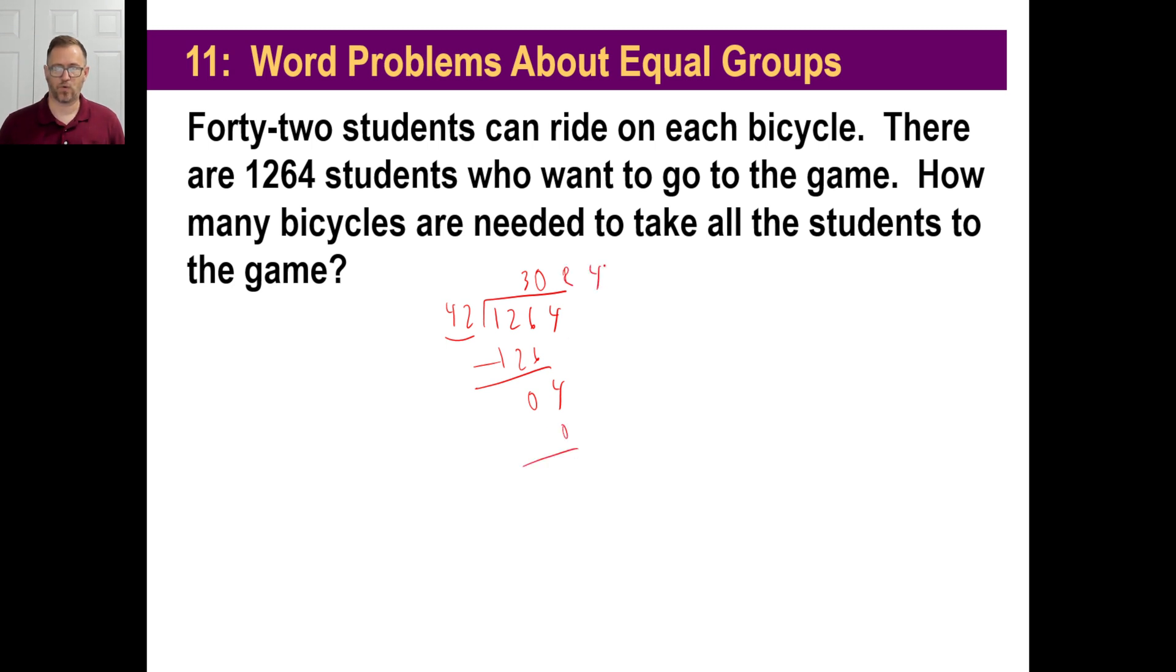42 into 4 goes 0. And, of course, with the 0 there, we have a remainder of 4. Now, think about this, though. What's the answer to the question? Look at the question. How many bikes are needed? You can't say, oh, sir, the bike runs ablaze. We need 30 bikes, remainder 4. They'll have you thrown out. Or he'll be videotaping you and, like, uploading it to Instagram for everybody to laugh at. So you need to tell the guy, I need 31 bikes.